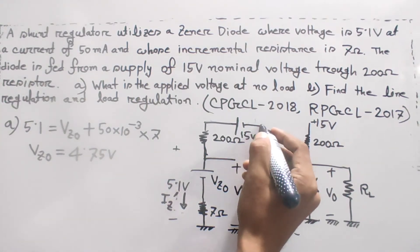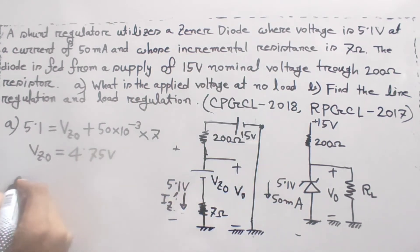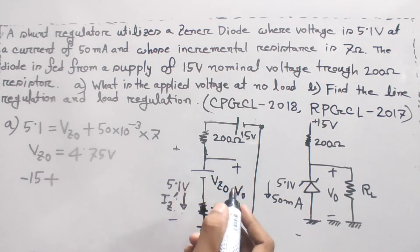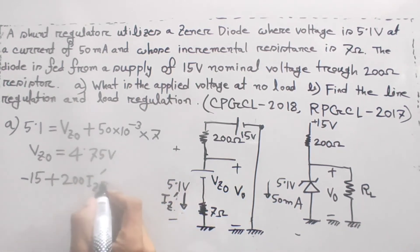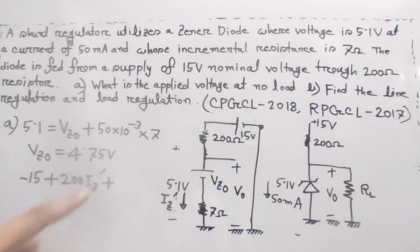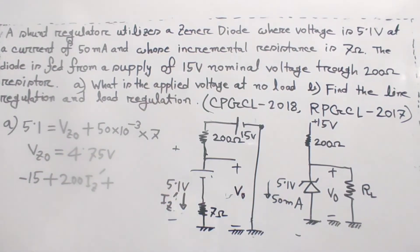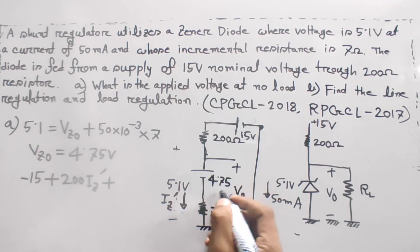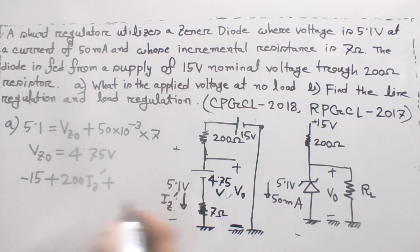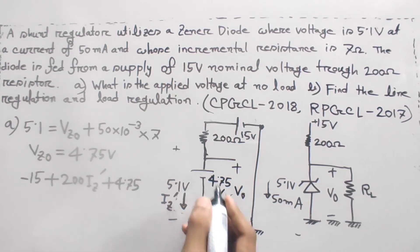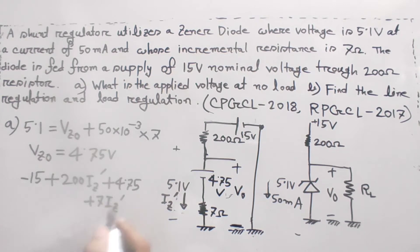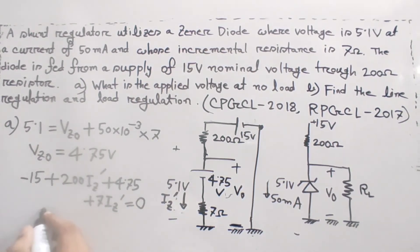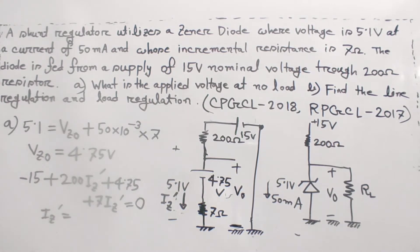Applying KVL: minus 15 plus 200 into iz-prime plus Vz0 plus 7 into iz-prime equals 0. Substituting Vz0 equals 4.75, we get iz-prime equal to approximately 0.0495 A. The output voltage computes to approximately 5.75 — wait, recalculating to get the correct value.